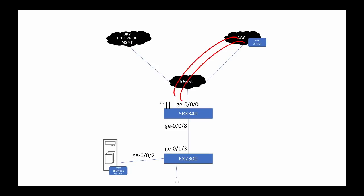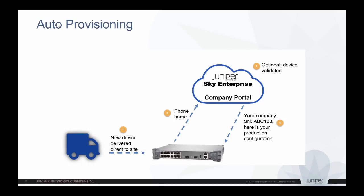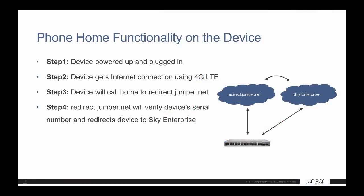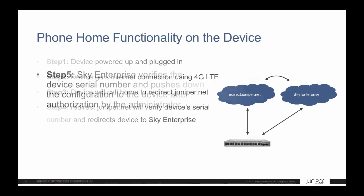The devices get shipped to the branch office site. The local personnel at the site will rack and power up the devices and connect cables based on the cabling diagram. When the SRX is powered up in factory default state, it reaches out to redirect.juniper.net automatically using the 4G LTE connection. The redirect service will redirect the device request to Sky Enterprise portal. Sky Enterprise will verify the serial number of the device and alert the Sky Enterprise Administrator about the new device waiting for authorization.